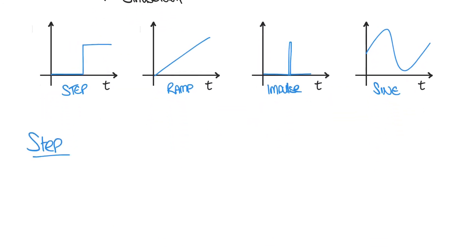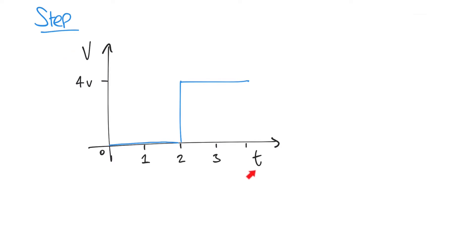The first input type is the step input, which is common in control systems. In an electrical system, it's the input we'd expect when we switch something on — a supply voltage was zero and then at some time T, the voltage switches on and there's a sudden step increase. In a mechanical analogy, it could be a mass falling into a hopper. Looking at a graph of voltage against time, we have a voltage which is initially zero volts, but then at time T equals two seconds, we have this step input and the voltage becomes four volts. A step function is an example of a delayed function because there's some time delay before the step takes place.